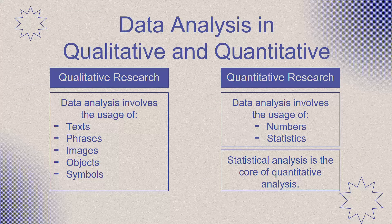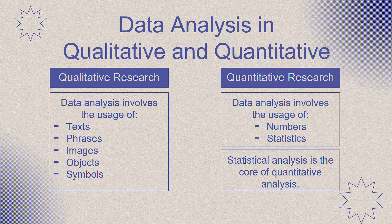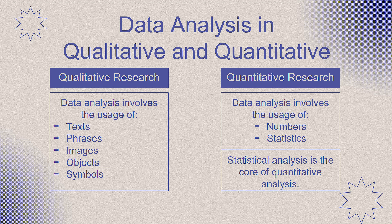Next is data analysis in qualitative and quantitative research. Data analysis in qualitative research usually involves texts, phrases, images, objects, and symbols to easily picture out descriptions. While in quantitative research, it involves the usage of numbers and statistics to explain a phenomenon. Statistical analysis is the core of quantitative analysis, which deals with basic calculations including average and median, to more sophisticated analyses like correlation and regressions.